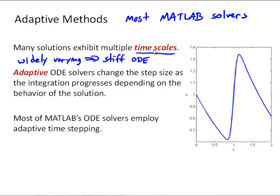In general, a lot of solutions exhibit multiple timescales, and here's an example. Here we have a slowly changing function, and then a rapid change in the derivative here, and there, and then back to a slow change. So here's a short scale, and then a longer timescale.